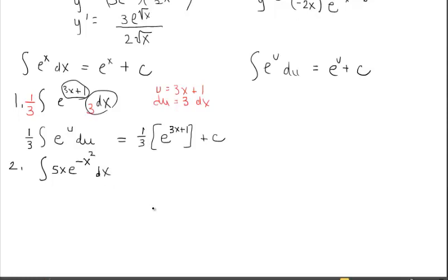For example two, when you see e, consider whether u-substitution can make the integrand look like the e-to-the-u rule, which gives back e to the u plus C. Let u be the exponent. The derivative of u produces the variable factor x, which is already present in the integrand as x dx — but I don't want the 5, I want a negative 2.